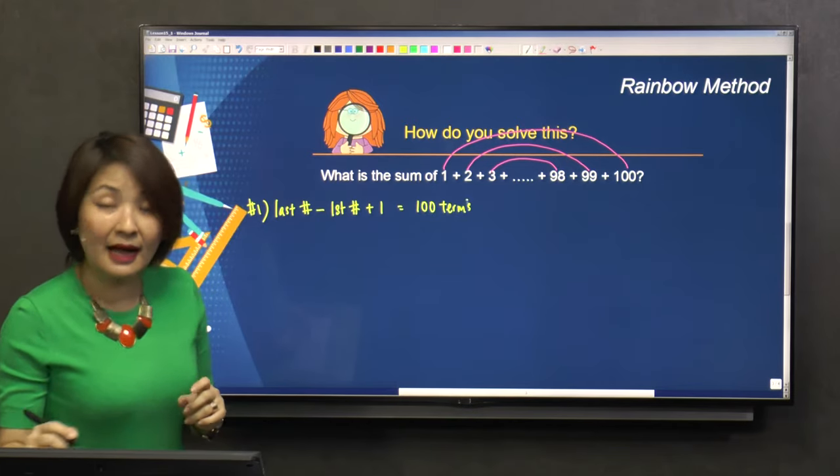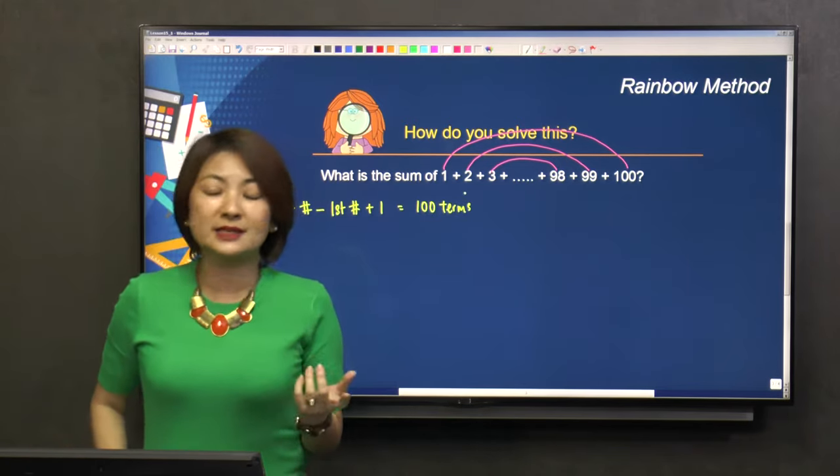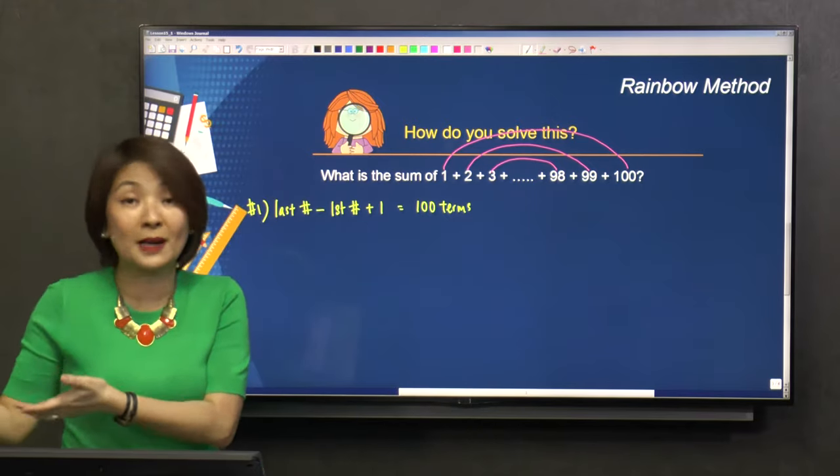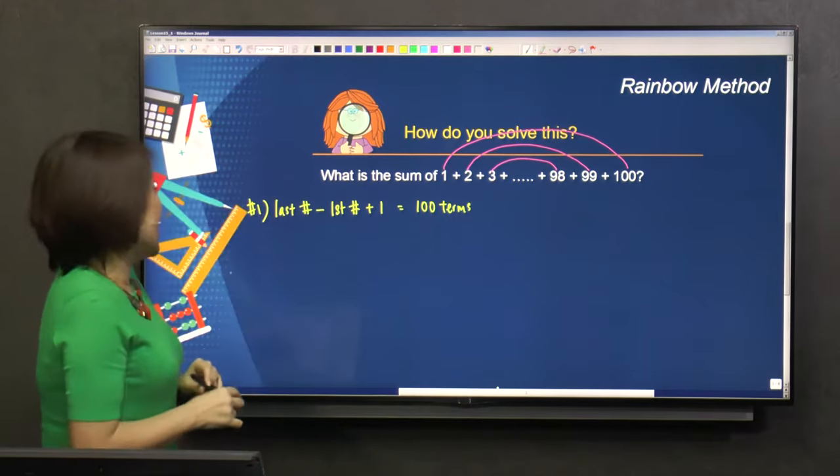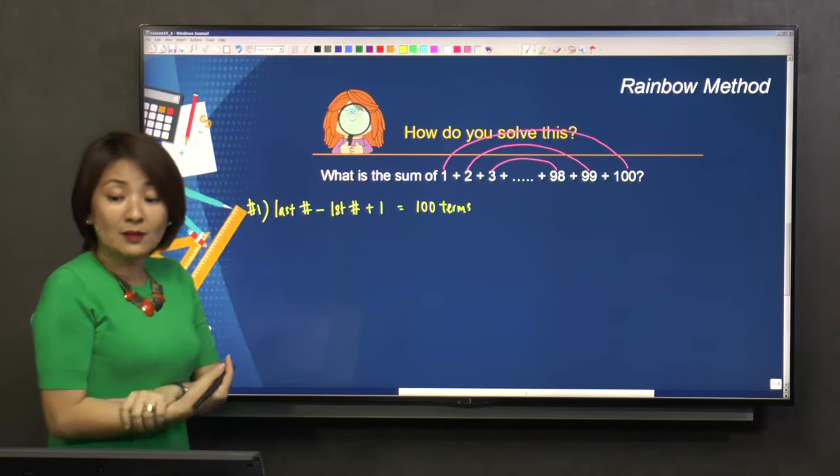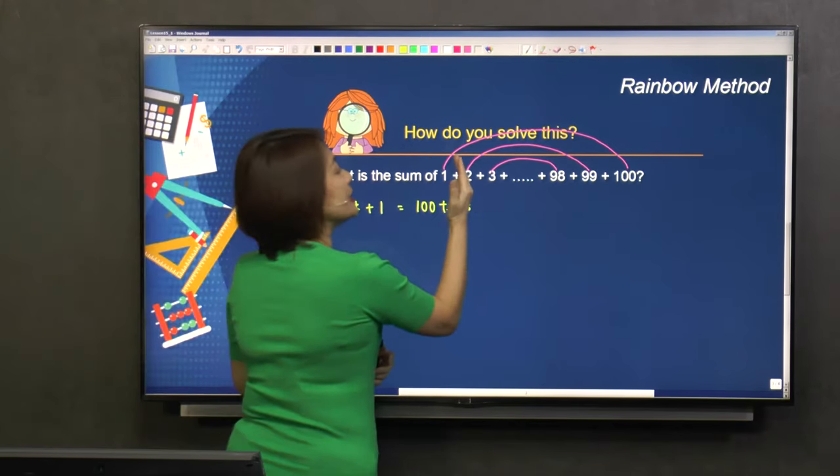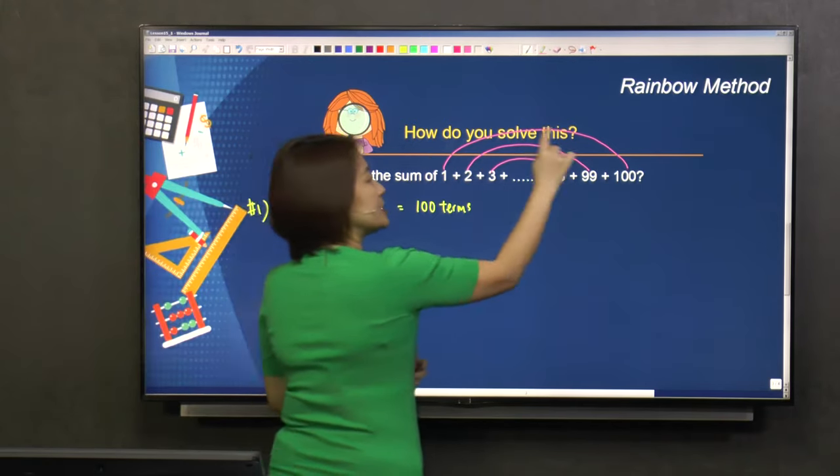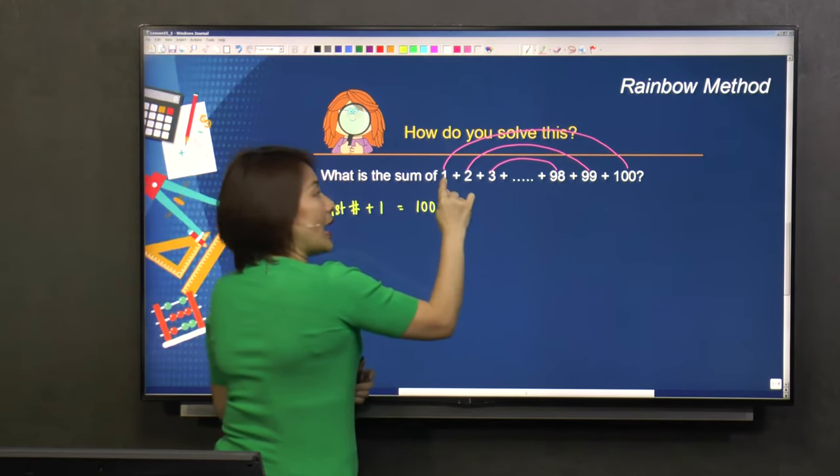Again, I've got students who tell me, 'What a waste of time. Can't you tell 1 + 2 + 3 to 100 is 100 numbers?' Then what's the second step? Well, after you have found how many terms—you know there are 100 terms—what will we actually do?